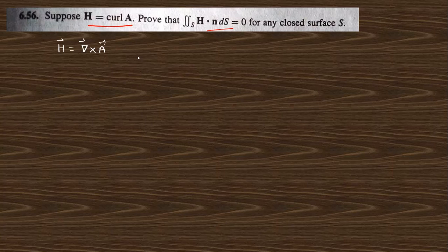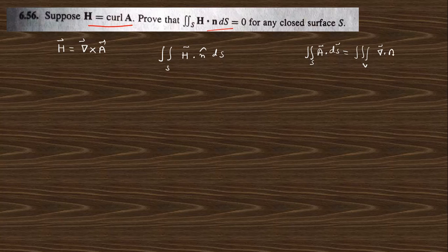H vector is nothing but the curl of A vector. Now, we want to find out the surface integral of H vector dot n̂ dS. The Divergence Theorem says that any vector dot dS vector, that is n̂ dS, is nothing but the volume integral — this is the surface integral — and this is the volume integral of divergence of A dV. By using the Divergence Theorem, we can say this is the volume integral of divergence of H dV, and H is nothing but curl of A.